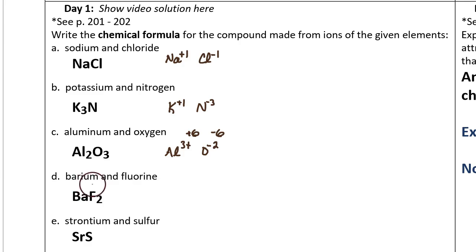Question D: Barium and fluorine. The answer is BaF2. Here's the reason why. Barium is in group 2A, so it makes a positive two ion. Fluorine is in group 7A, so the fluoride ion has a negative one charge.